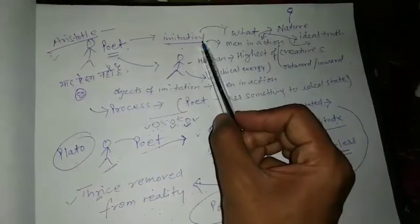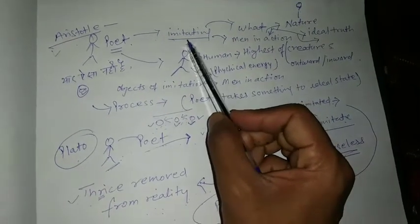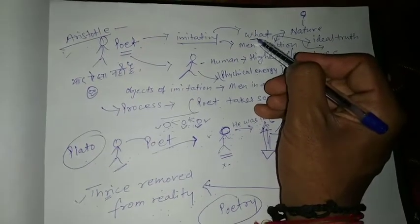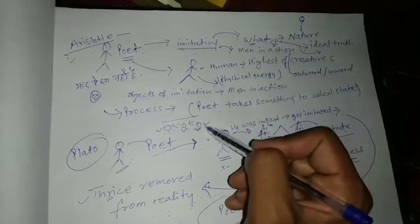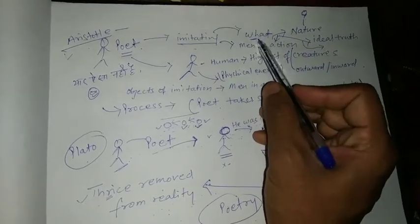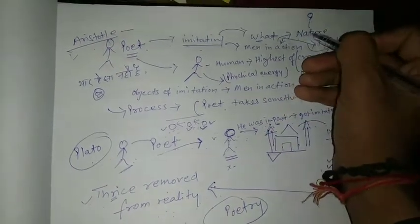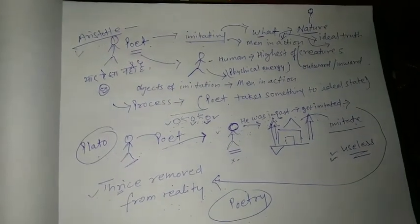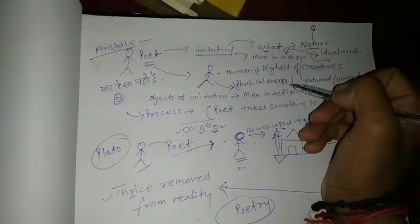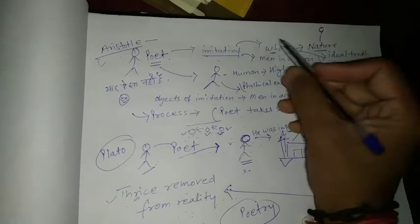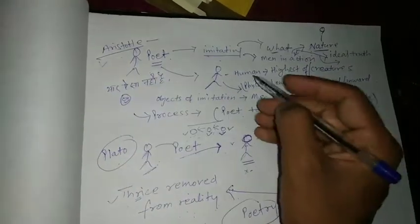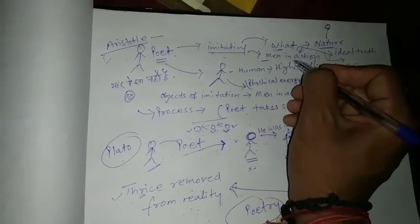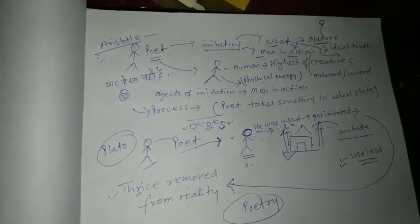Aristotle says, simply, that yes, the poet imitates, or he is imitating things, but what he imitates, this is the question that is important. Here is the difference. He is saying, what he imitates? He imitates nature. But nature doesn't mean the trees and other things. Nature means, nature of a human being, or according to Aristotle, poets are imitating man in action. What is the action? Action is going inward.